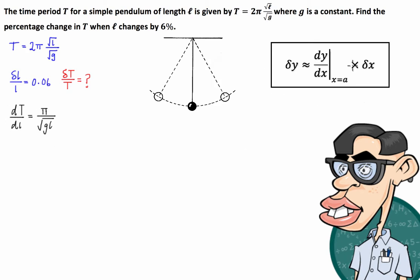So now what we're going to do is enter this into the formula that I provided on the right hand side here. So the small change in T can be approximated by the derivative of the function times the small change in l.